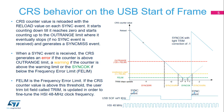If the CRS counter value is below the phelim limit, no trim actions are taken. If it is between 3 times phelim and phelim, the trim bit is incremented or decremented by 1, depending on the counter direction. If the CRS counter is between 128 times phelim and 3 times phelim, the trim bit field is incremented or decremented by 2 trim steps.